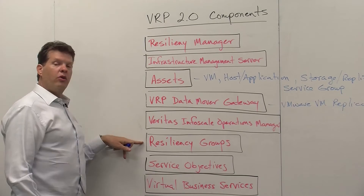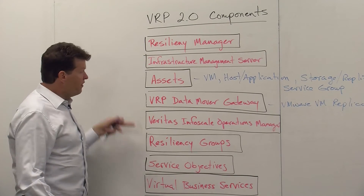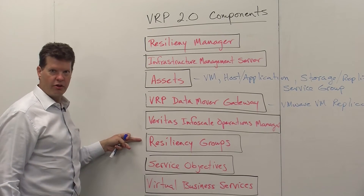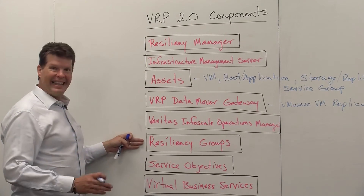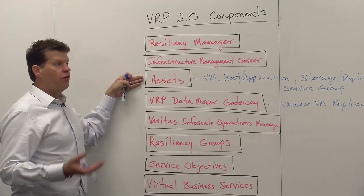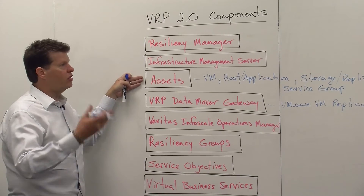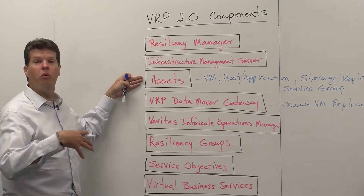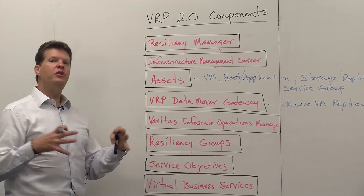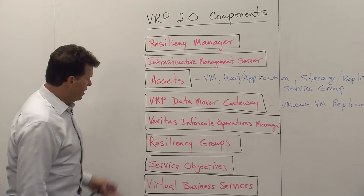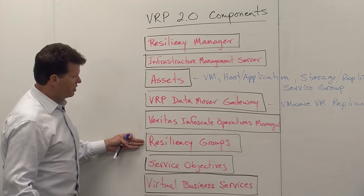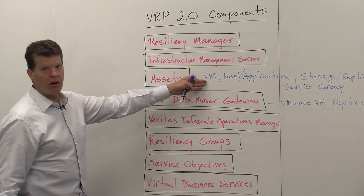We also have something known as resiliency groups. If you're familiar with VCS and what a service group is, you're pretty familiar with what a resiliency group is. A resiliency group is a collection of one or more assets that we are managing for migrations, rehearsals, takeovers, starts and stops — between our data centers or within a single data center. The resiliency group is the unit of migration, so we initiate migration, rehearsal, and takeover actions on the resiliency group itself.